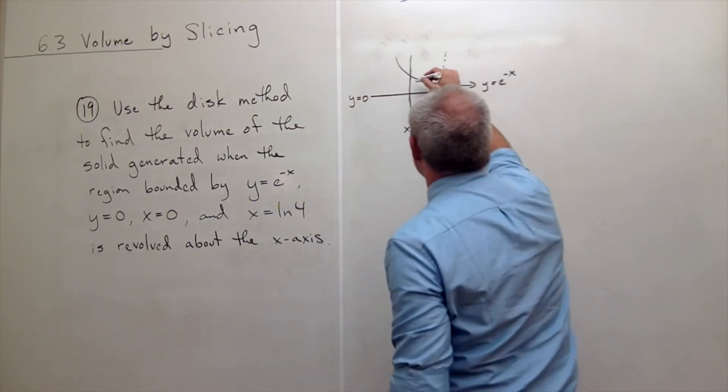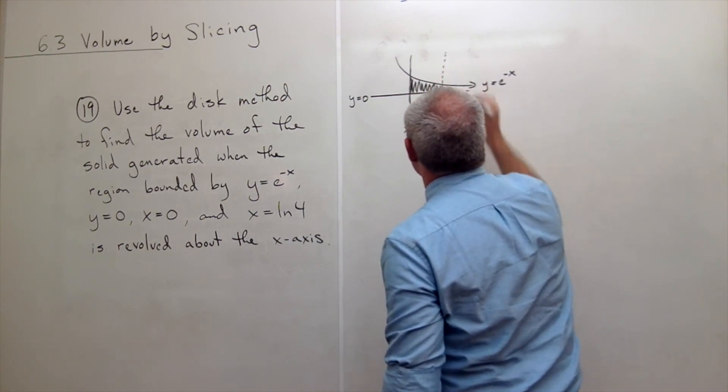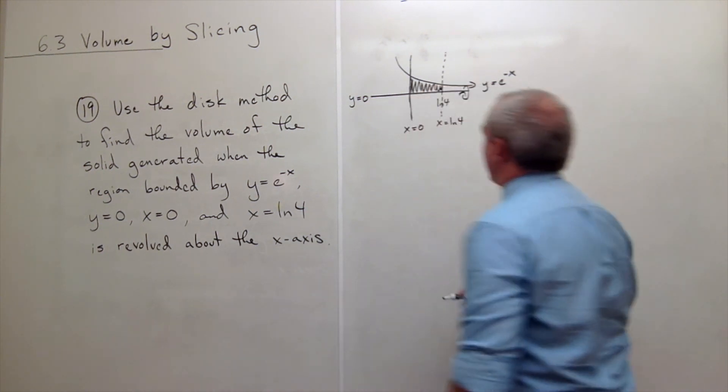So somewhere up here is the point ln of 4, and here's x equals ln of 4. So we've got these four curves. They bound this region right here. And then we want to take that region and spin it around the x axis.